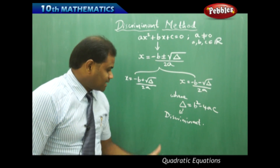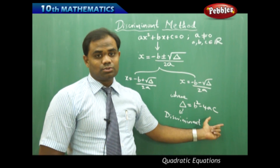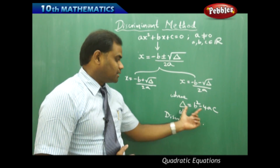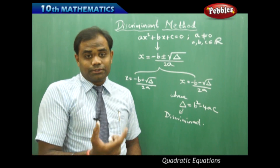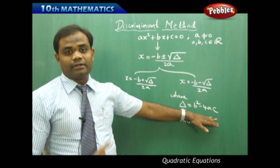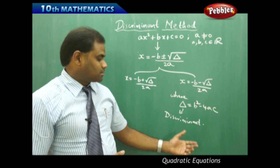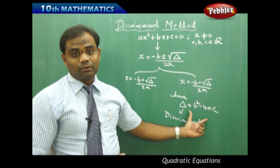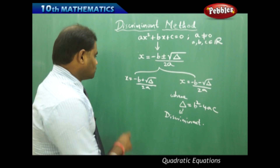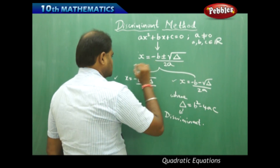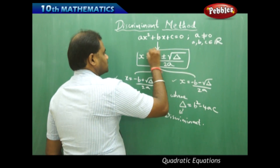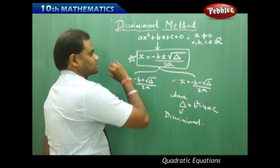The discriminant has a very significant role to play in quadratic equations. It decides the nature of roots, or the nature of solutions obtained. We will see this in more detail in future sessions, but the discriminant has a very important role in quadratic equations. The two roots given by this formula are ultimately derived from this expression.